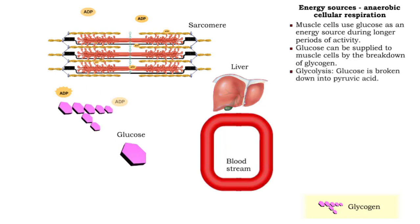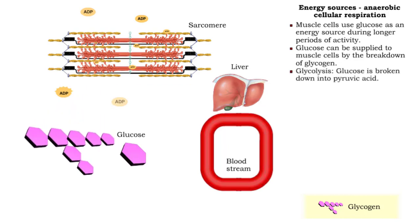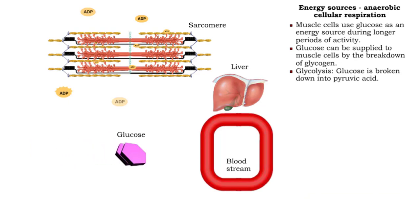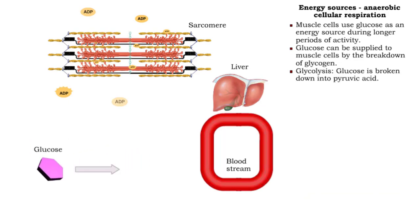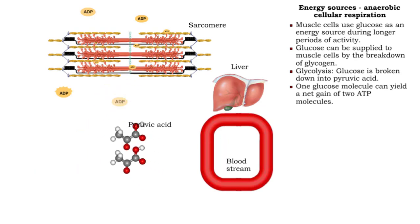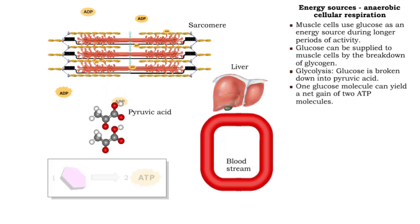In a series of reactions called glycolysis, glucose is broken down to pyruvic acid molecules. The reactions which convert glucose to pyruvic acid use two ATP molecules but produce four, for a net gain of two.